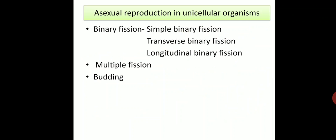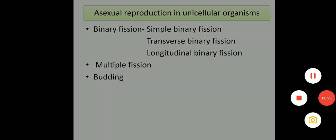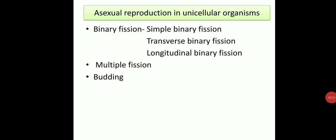The fission process includes binary fission, which is divided into three types. Simple binary fission — example: Amoeba. Transverse binary fission — example: Paramecium. Longitudinal binary fission — example: Euglena.